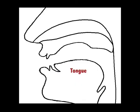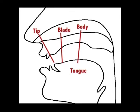Let us have a look at the tongue. This is the tip, and this portion just behind the tip is called the blade. This portion is the tongue's body, and this region is the back of the tongue, and this is the tongue's root.